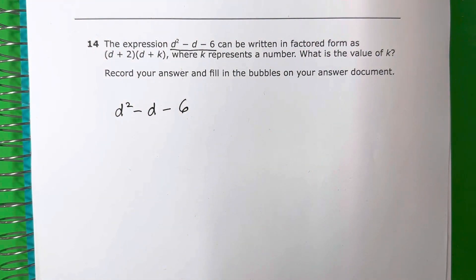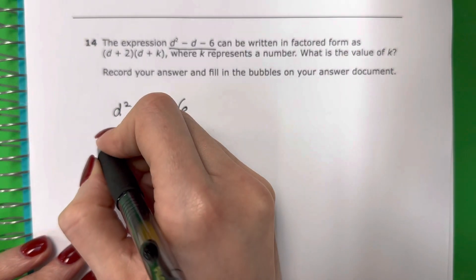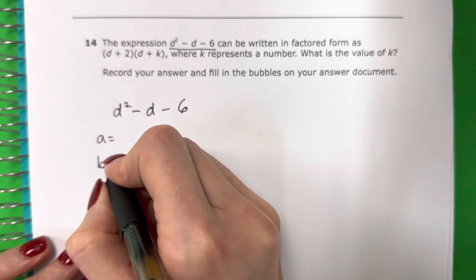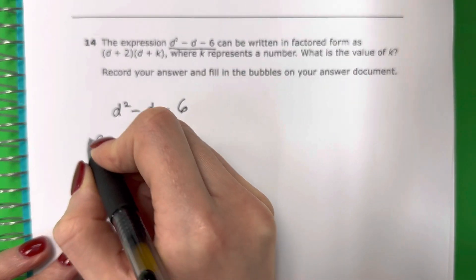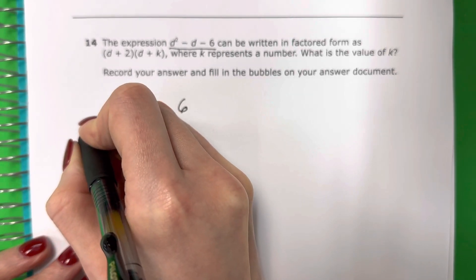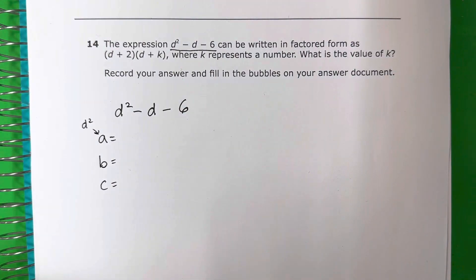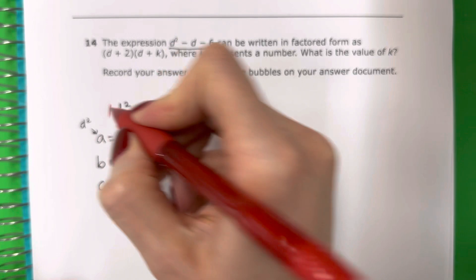The first thing is we need to do a, b, c. La primera cosa es que necesitamos a, b, c. A is the number with the letter squared. A es el número con la letra cuadrado. So if there's no number, si no hay número, you're going to put 1. Vamos a poner 1. So here it's 1. Es 1.